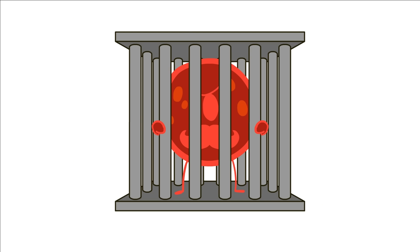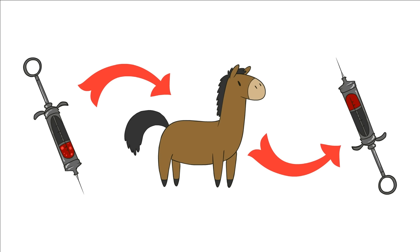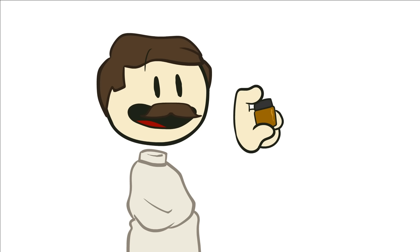At the Rockefeller Institute, they isolate Pfeiffer's bacillus in mid-October. And the Army Medical School begins the process of injecting it into horses, drawing their blood, and isolating the antibodies for a vaccine. By October 25th, the vaccine is ready.